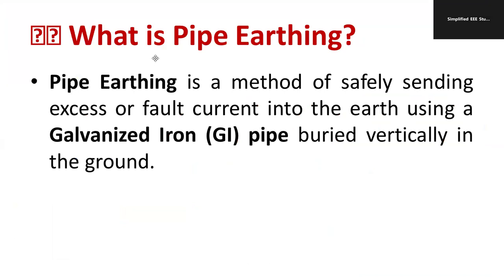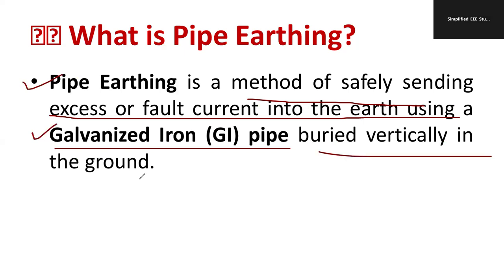First, let's understand the definition of pipe or rod earthing. Pipe earthing is a method of safety for sending excess or fault current into the earth using galvanized iron pipe, also known as GI pipe buried vertically in the ground. In the earlier case of plate earthing we used a copper or galvanized plate, but in this case we're using galvanized iron rod or pipe buried vertically underground. The peculiarity of this method is to send the excess or fault current to the ground.